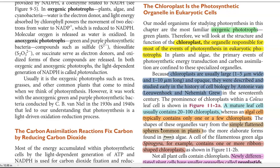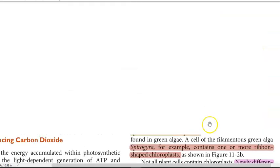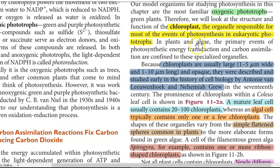So first, what is chloroplast? Chloroplast is an organelle that is responsible for events of photosynthesis in eukaryotic phototrophs. They are commonly present in the oxygenic phototrophs. Oxygenic phototrophs refers to those organisms in which oxygen will be evolved during the final step of the photosynthesis process.